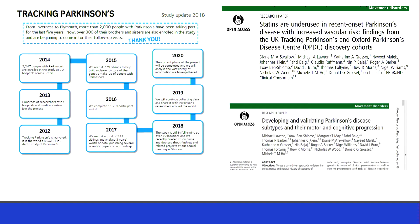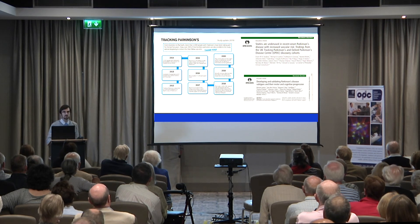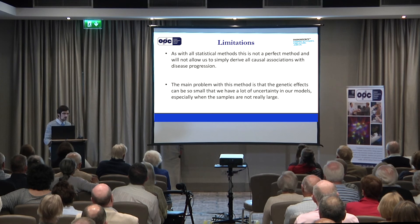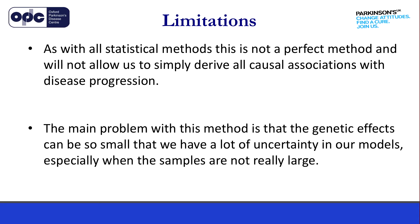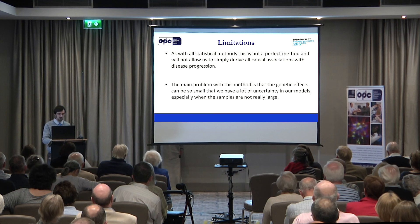What we're doing is teaming up with our sister cohort based in Glasgow — the Tracking Parkinson's cohort — which started around about the same time as Discovery. We have collaborated with them before on other papers to increase our numbers and validate our findings. The big limitation with this method, although it's great that we can get rid of the confounding problem, is that it won't simply allow us to derive all causal associations with disease progression. The main problem is that genetic effects can be so small that there's a lot of uncertainty in our models, especially when the samples aren't really large. We may need to increase our sample size to 3,000 or 4,000 before we can remove some of this uncertainty.